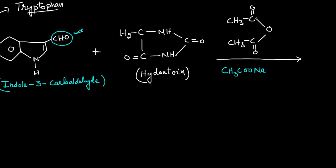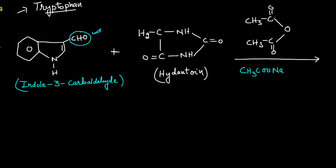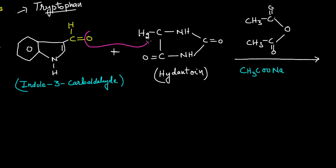When these react with each other, we can write the CHO group. The oxygen and H2 are lost — that is, the water molecule is lost. When the hydantoin and the aromatic aldehyde react with each other, the reaction takes place at carbon number 3 of Indole where the carboxaldehyde group is present, and there is a removal of the H2O molecule.